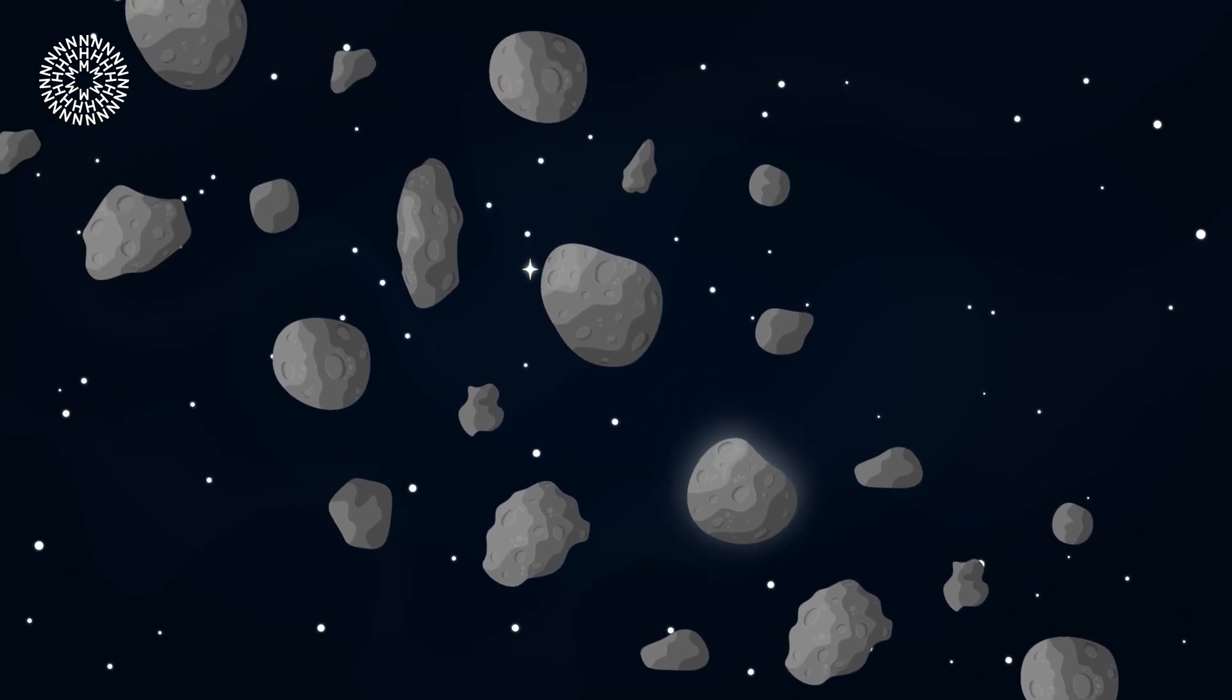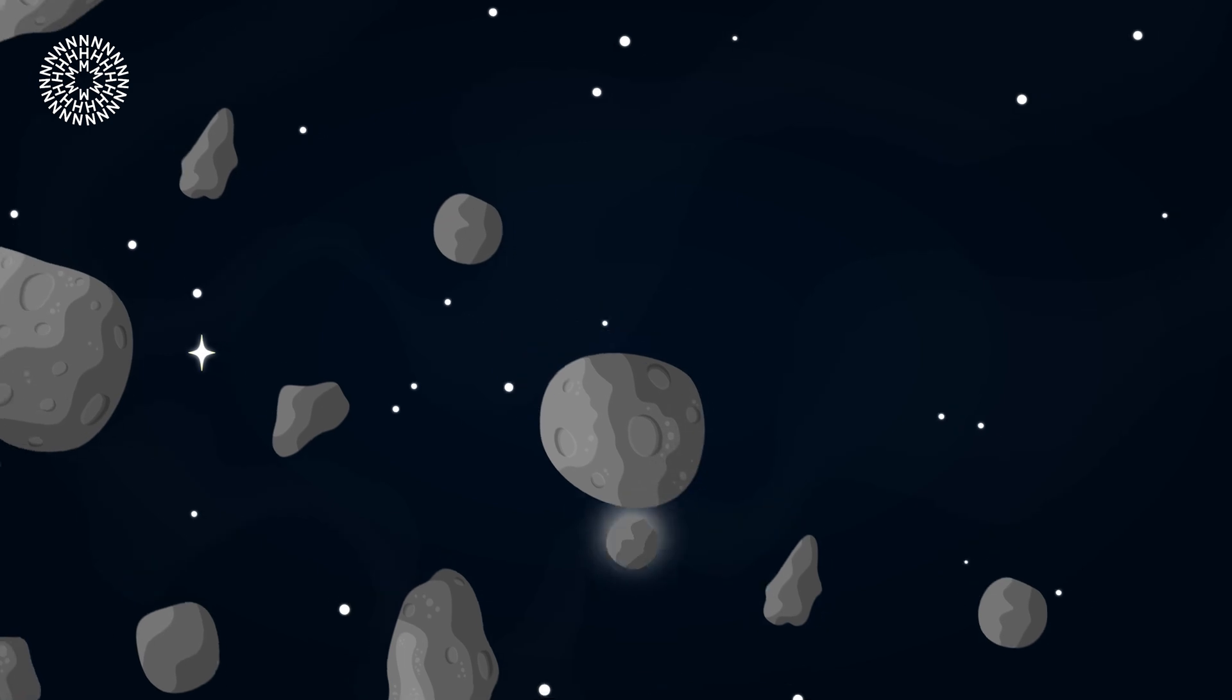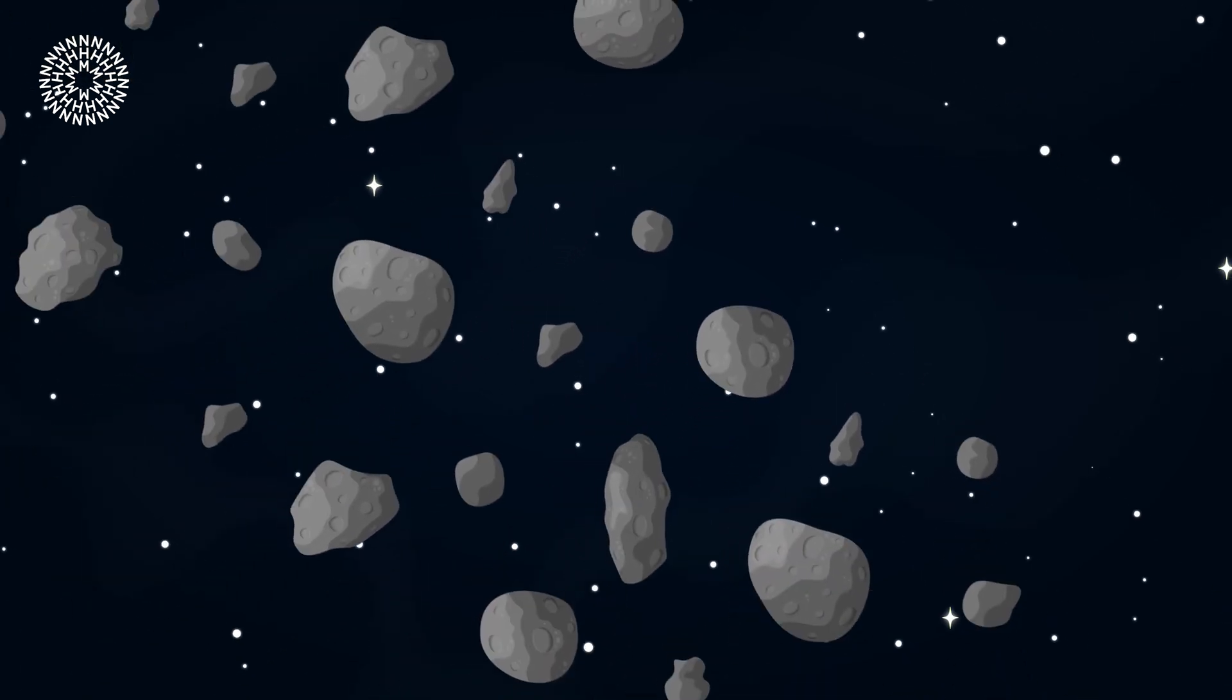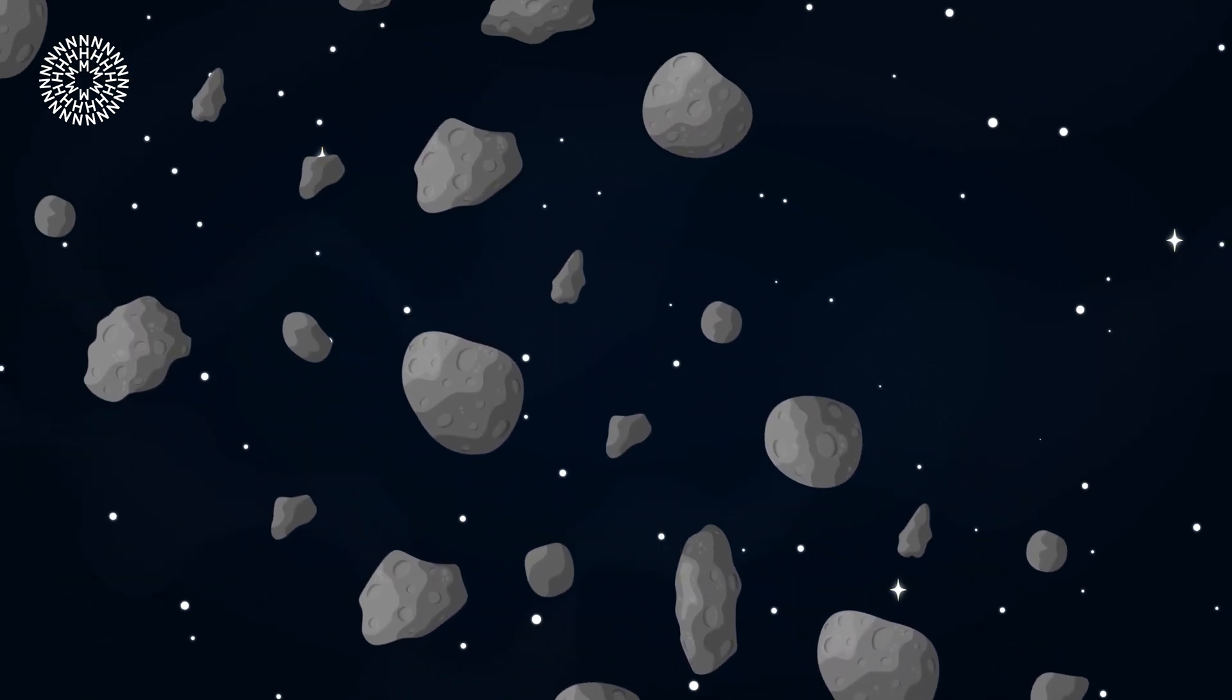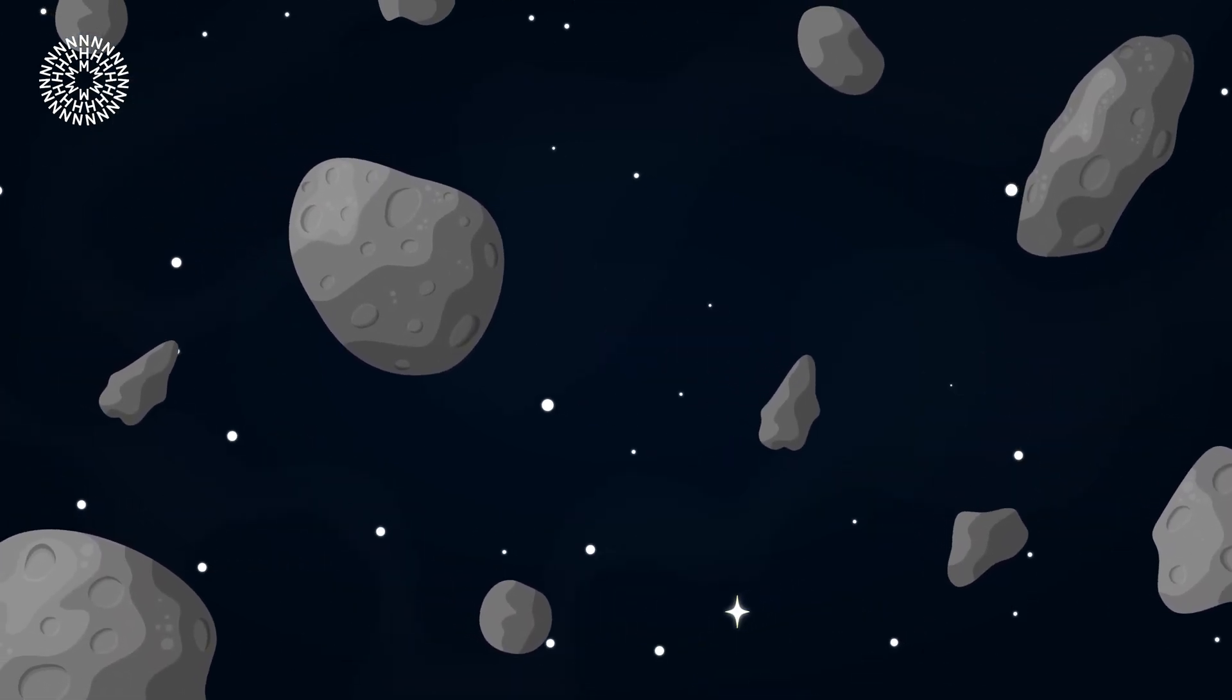Asteroids can be round, elongated and some may even have very small moons. But most importantly, they are rocky objects, some containing metal and many also contain carbon.